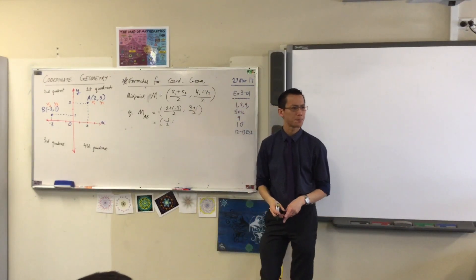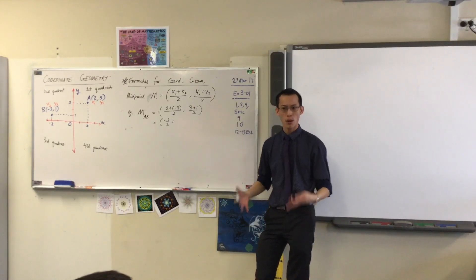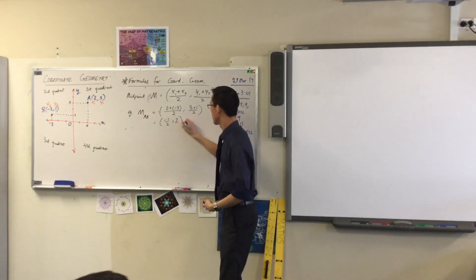What about on the right hand side? What am I getting here? 4 over 2. 4 over 2, which is? 2.